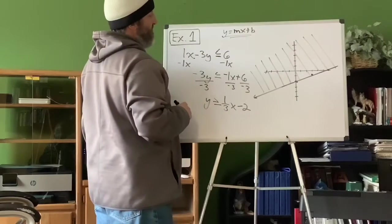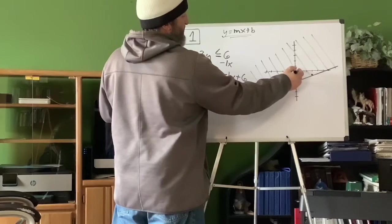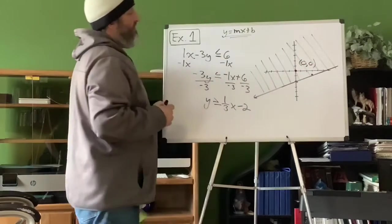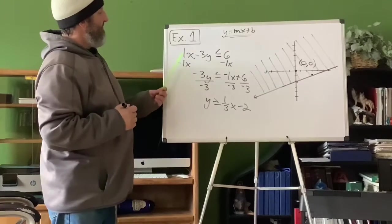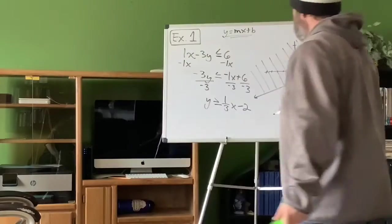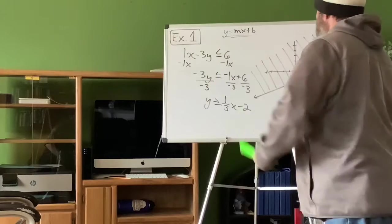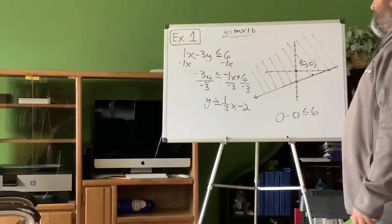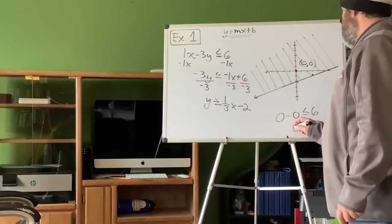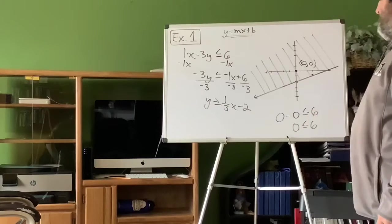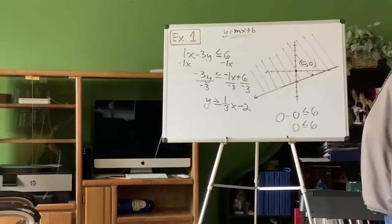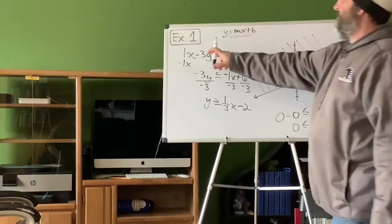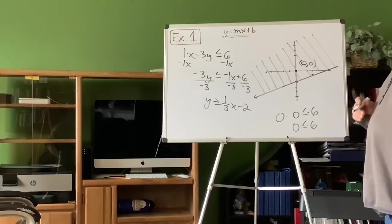You can choose any point in the shaded region and it will make this equation true. Let's choose the easiest point: zero, zero. Plugging into the original equation — 1 times 0 minus 3 times 0 has to be less than or equal to 6. Zero minus zero is zero — is zero less than or equal to 6? Of course it is. So that point is true. If you'd like to test another point yourself, push pause and do that.